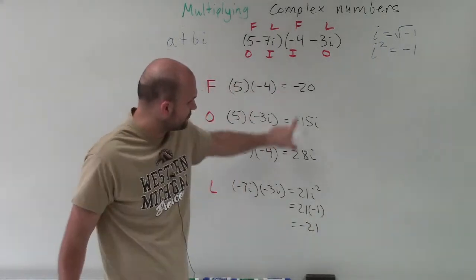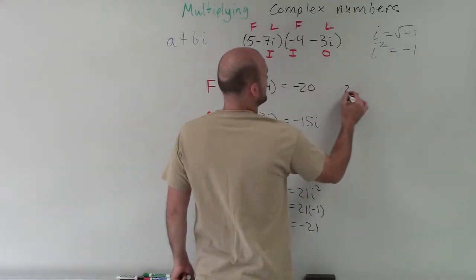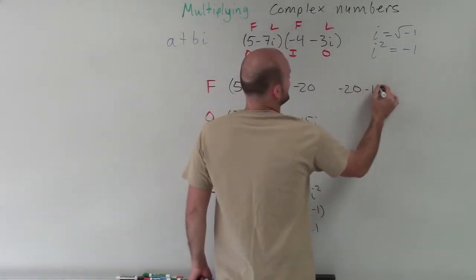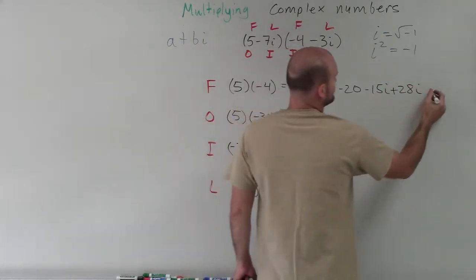Now what I do is I rewrite all of my answers together, and then I can simplify it. So I have negative 20 minus 15i plus 28i minus 21.